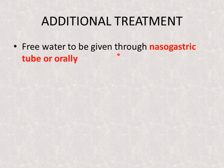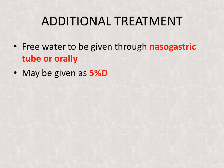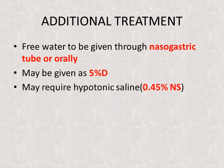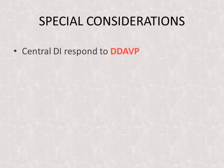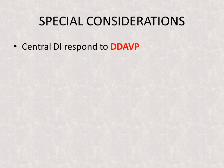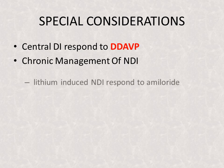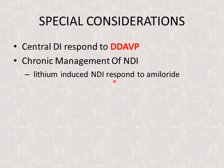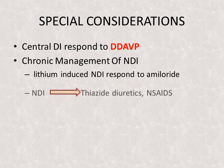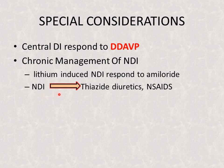Additional treatment may be required in specific patients. Free water may be given through a nasogastric tube or orally, or as 5% dextrose. Patients may require hypotonic saline, that is 0.45% normal saline. Central diabetes insipidus responds to desmopressin. For chronic management of nephrogenic diabetes insipidus, lithium-induced cases usually respond to amiloride, while other causes can respond to thiazide diuretics and NSAIDs. Remember, this is only for chronic management of nephrogenic diabetes insipidus.